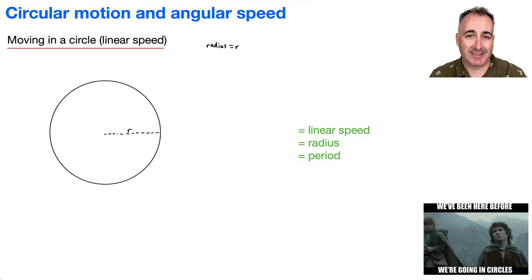Circular motion and angular speed. I put this from Lord of the Rings in here before. We're going in circles. So if we have something that is going in a circle, let's just assume, let's put a point right here.